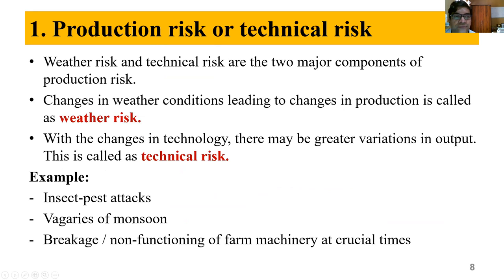What is production or technical risk? Production risk has two components: weather risk and technical risk. Weather risk refers to changes in weather conditions leading to changes in production. Technical risk refers to changes in technology — there may be variations in output depending on how efficiently the farmer is utilizing resources. When superior technology is available but the farmer cannot efficiently use his resources, he will get lesser output.